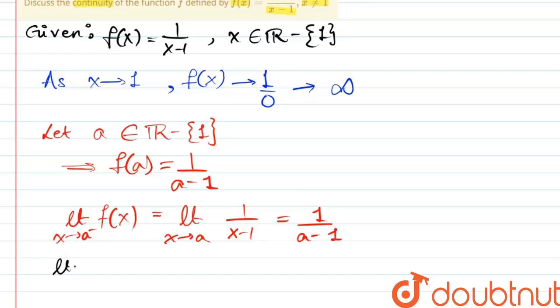Now the right hand limit as x approaches a of f(x) is equal to the limit as x approaches a of 1/(x-1). There is no indeterminate form obtained when we apply the limit directly, so this will also be 1/(a-1).